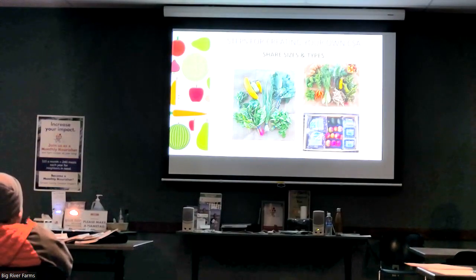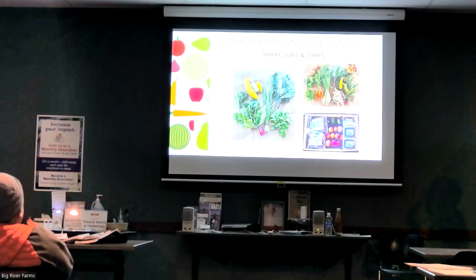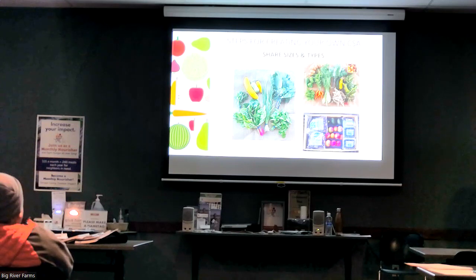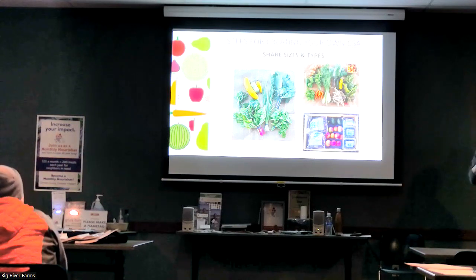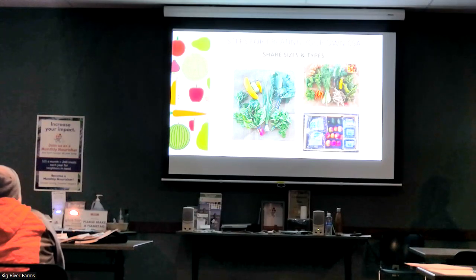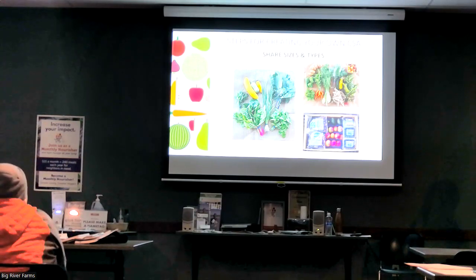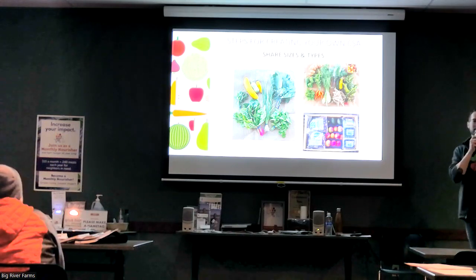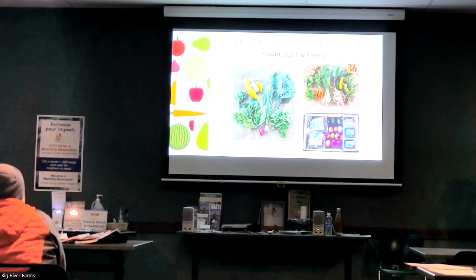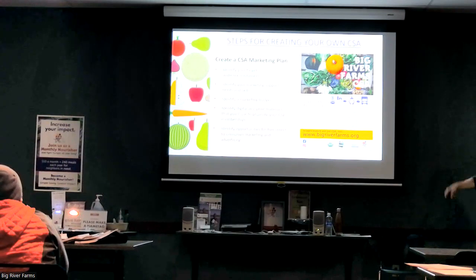Here are some visuals of share sizes: the photo on the left shows an example of a small or half-size share with about six items, and the photo on the right from the same farmer shows a full share with maybe twelve to thirteen items. The bottom photo shows one of the fruit shares offered as part of the Big River Farms CSA program — from a farmer in Stillwater who grew organic fruit and sourced things like grapes and stone fruit from the Pacific Northwest.